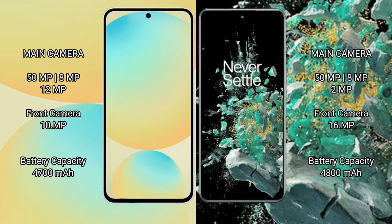Samsung Galaxy S24 FE packs a 4600mAh battery with 25W fast charging support. OnePlus 10T comes with a larger 4800mAh battery with 150W fast charging support.